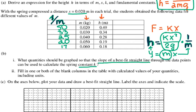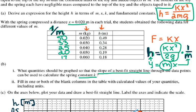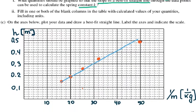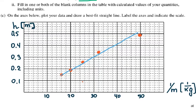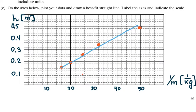So in part c it says: on the axis below, plot your data and draw the best fit straight line, label the axes and indicate the scale. So I use the data that is given here and the 1 over the mass that I calculated to draw the graph h versus 1 over m. I took the points from the table, plotted them in, and as they said, you will not get credit unless you label the axes. You need to show the measurements, indicate the scale, and show what the divisions are.